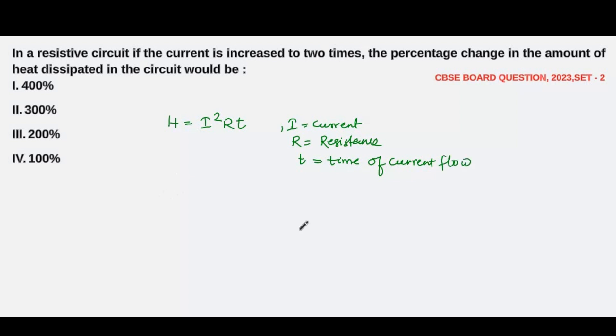So this is the amount of heat generated. Now the current is increased to two times, so what will be the new current? Let I' be the new current, so I' will be 2I—it's doubled, increased to two times. Accordingly, our heat generated would also change.